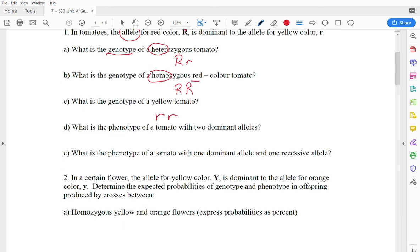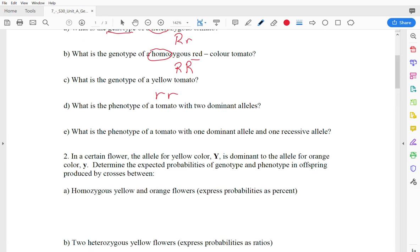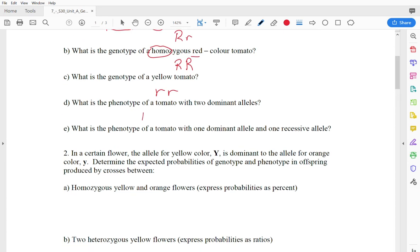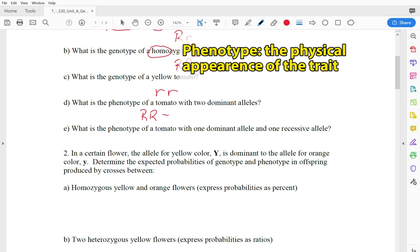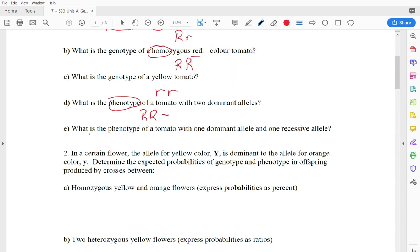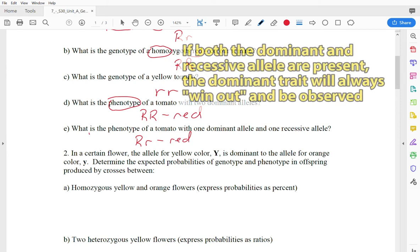What's the phenotype of a tomato with two dominant alleles? So if you had two dominant alleles, we're going to find the phenotype. Now phenotype is a fancy word for what does it actually look like? What does it physically look like? What could you see with your eyes? So two dominant alleles is going to give you a red tomato. What if you have one dominant and one recessive allele? That's also going to be red because that dominant capital R allele is going to win out over the recessive and make that red color appear.